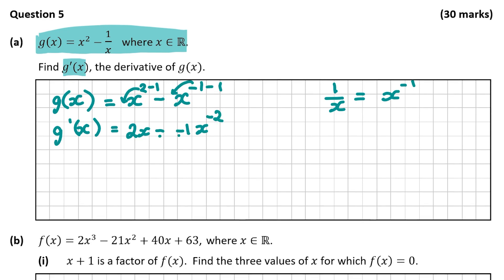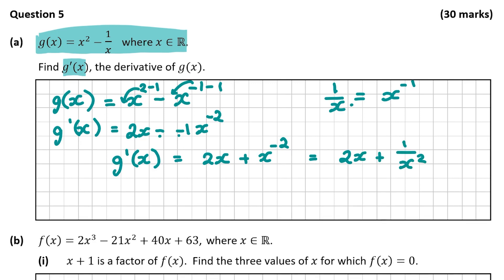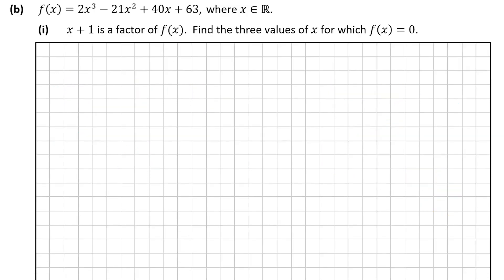Because you have a double negative here, that becomes a positive. So g dash x is going to be 2x plus x to the power of minus 2. You can leave it as is, or rewrite this as 2x plus 1 over x squared — x to the power of minus 2 goes to 1 over x squared. So this is our answer: 2x plus 1 over x squared, and you're going to get 5 marks for deriving this. Now let's move on to part b.